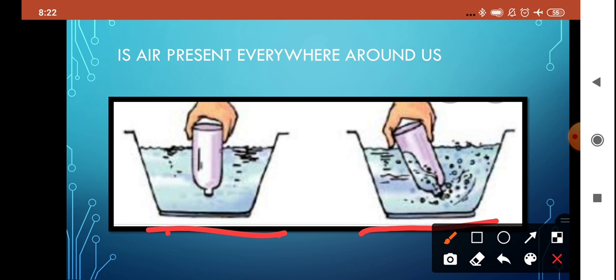And in the first case, the air does not have any escape route. So air was not able to come out from that bottle. Now, when in the second one, we have given air some space, you can see the bubbles. These bubbles are actually the air. The air is escaping from the bottle, and the space that is being emptied from the air will be filled up with the water. This experiment, this activity shows that air is present everywhere around us.